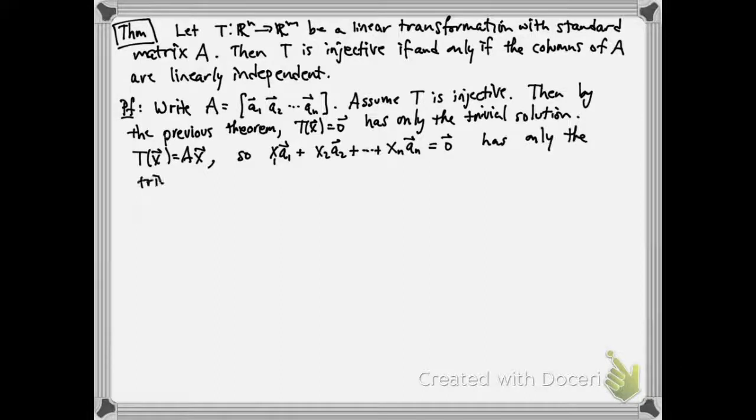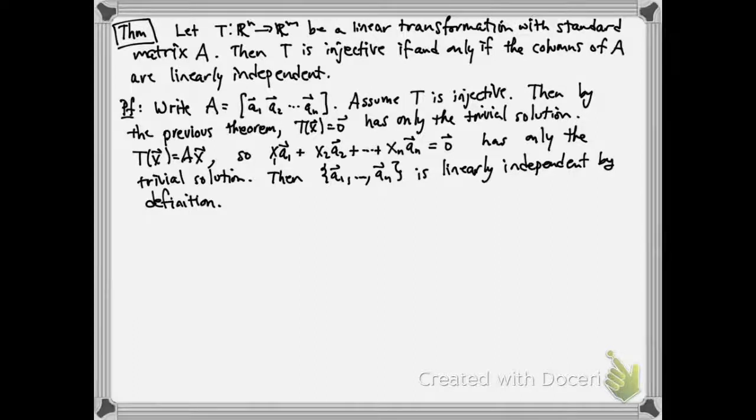And if we unwind what that means about the matrix, we're saying that AX equals the zero vector has only the trivial solution. And so if we write that as a vector equation, that's X1 A1 plus X2 A2 plus all the way up to Xn An equals the zero vector has only the trivial solution. But that's exactly the definition for this collection of vectors A1 up to An to be linearly independent.